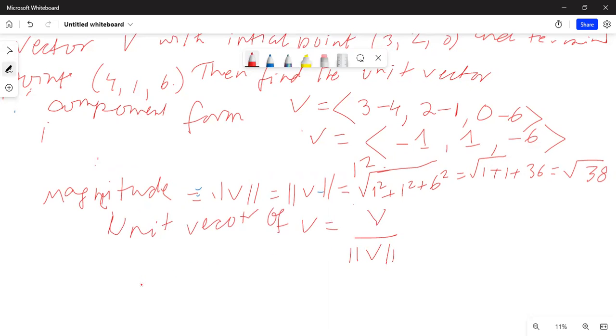So this will be equal to, vector v is given by <-1, 1, -6>. So it will be minus 1 over square root of 38, comma, 1 over square root of 38, comma, minus 6 over square root of 38. So this is the unit vector in the direction of vector v.